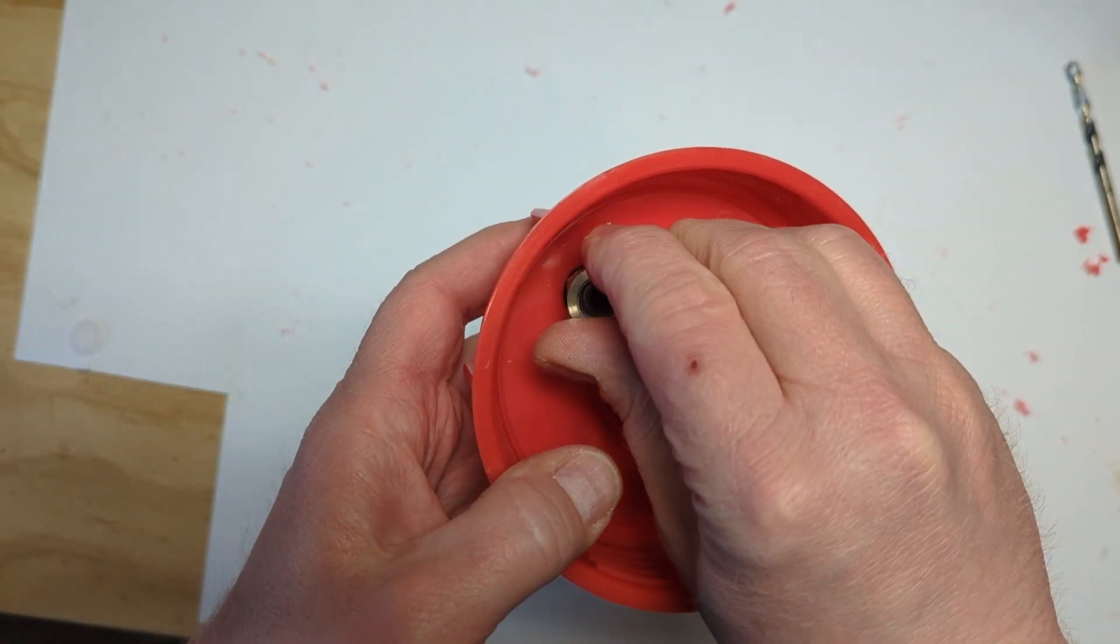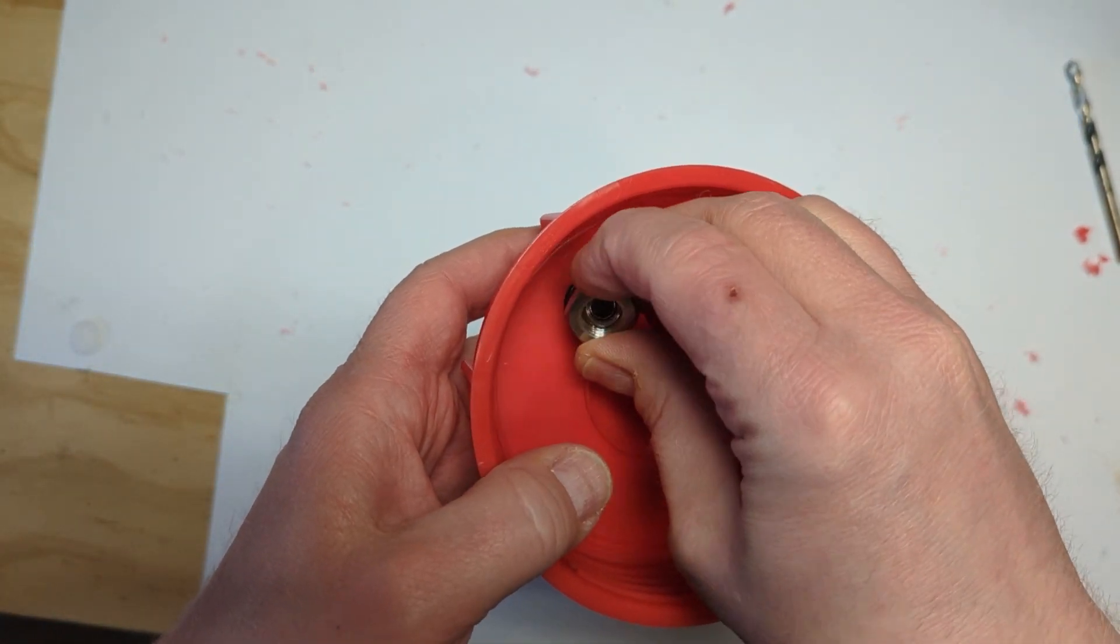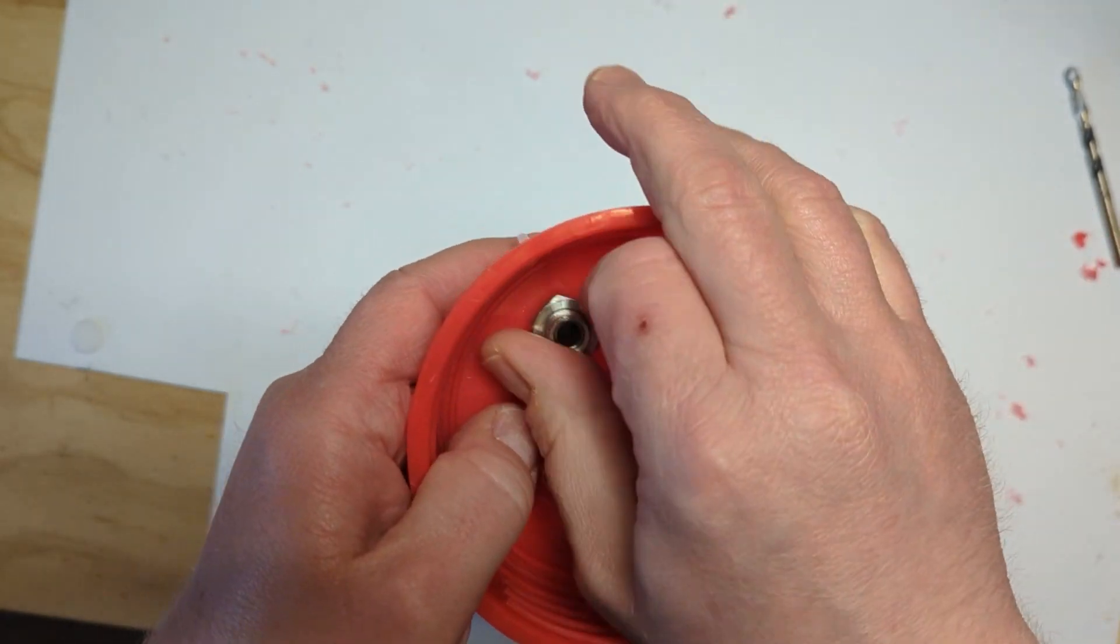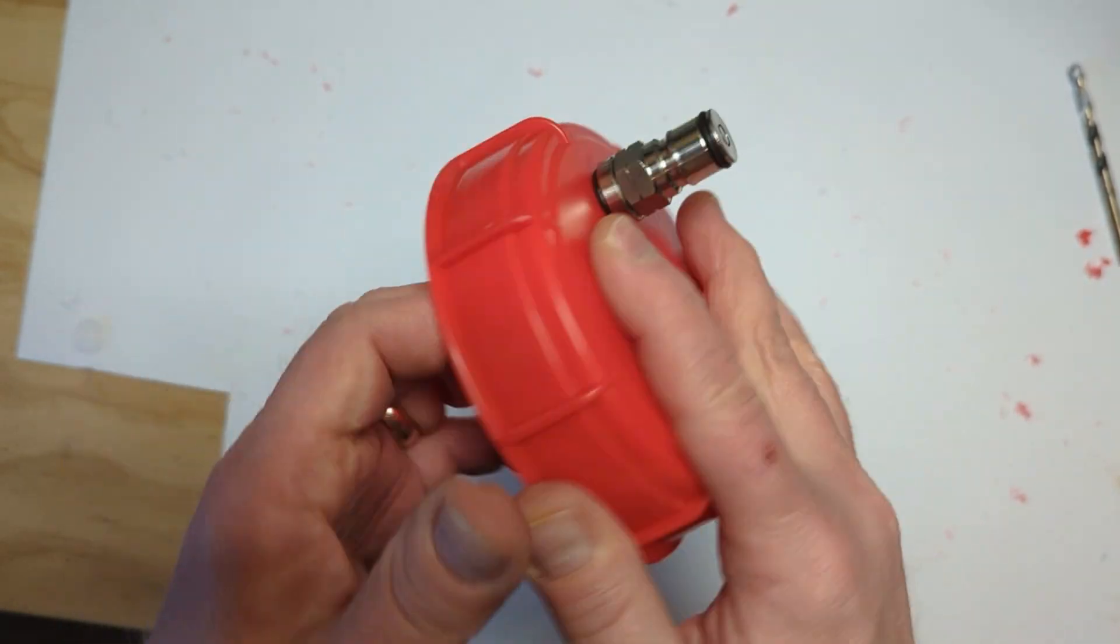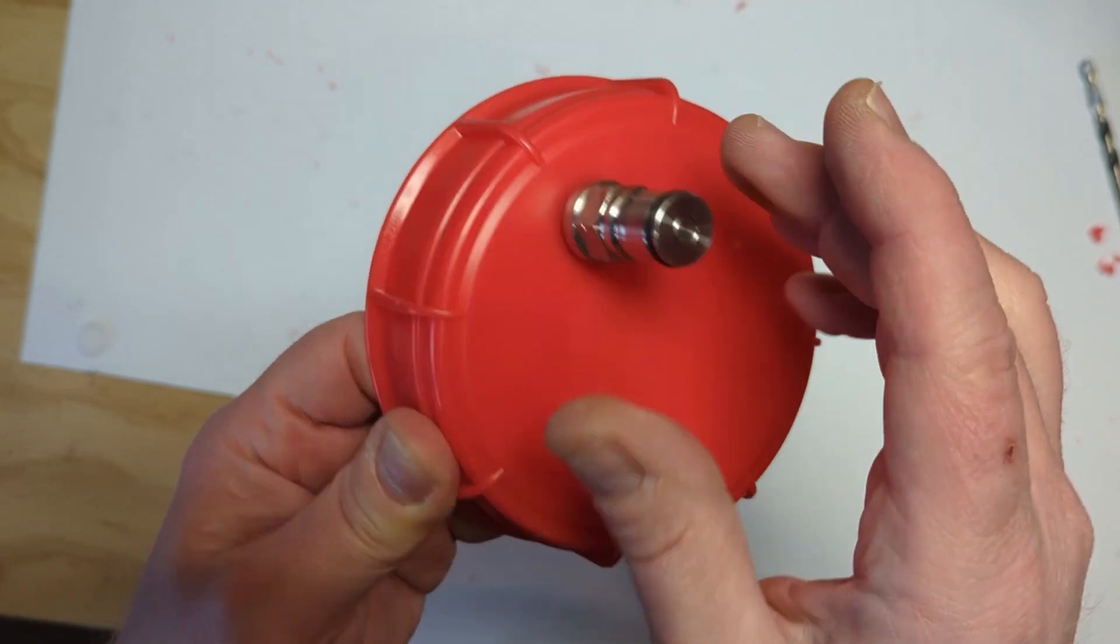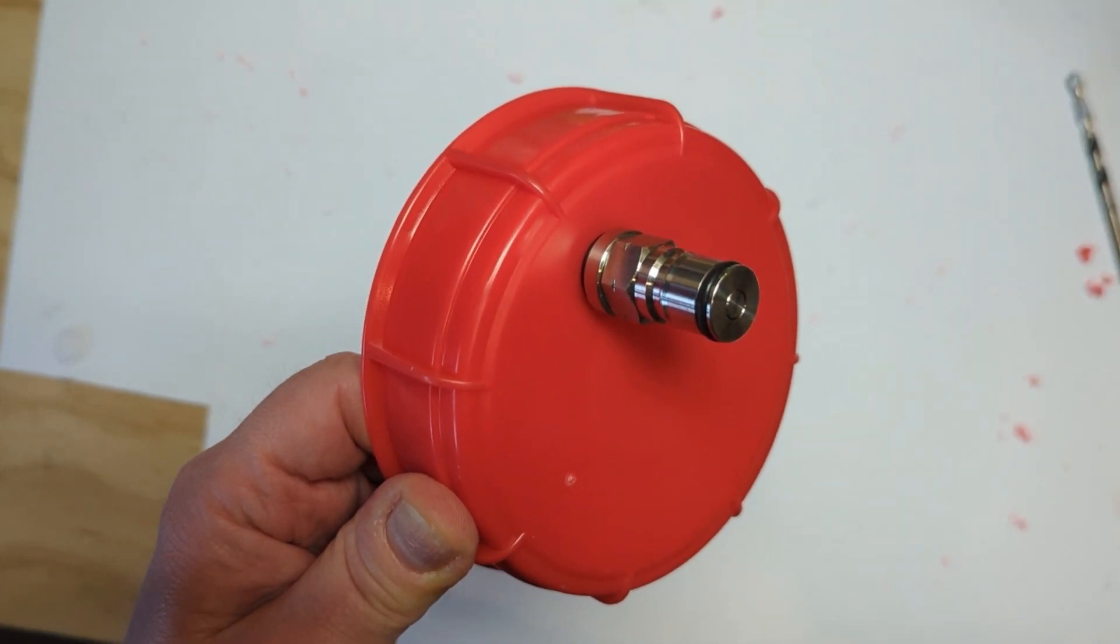And then the nut. And obviously I won't tighten this up a whole lot right now, but basically then you have a closed lid for your Fermonster fermenter. And again, I'm not interested in doing pressure fermentation.